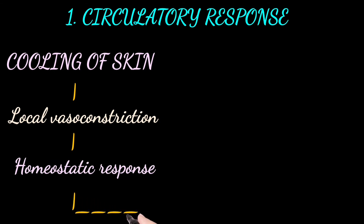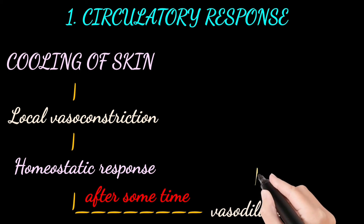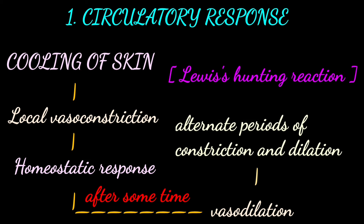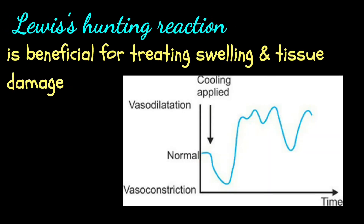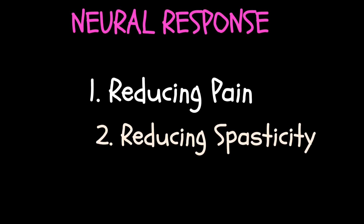After a short period of time, depending on the duration and area involved, there follows vasodilation and alternating periods of constriction and dilation. This apparent hunting mechanism of the circulation is called the Lewis Hunting Reaction. You will see a graph on the screen — please note that down. It is also beneficial for treating tissue damage.